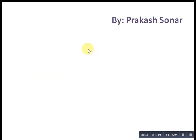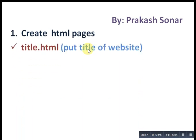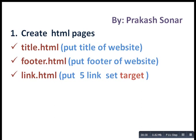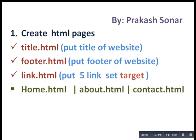Follow the steps. Create the following HTML pages: title.html, where you are going to put the title of your website; footer.html, where you are going to put the footer; and link.html, where we are going to use at least 5 links with a target tag set. The links I am going to use are Home, About, and Contact. So create these pages: home.html, about.html, and contact.html.